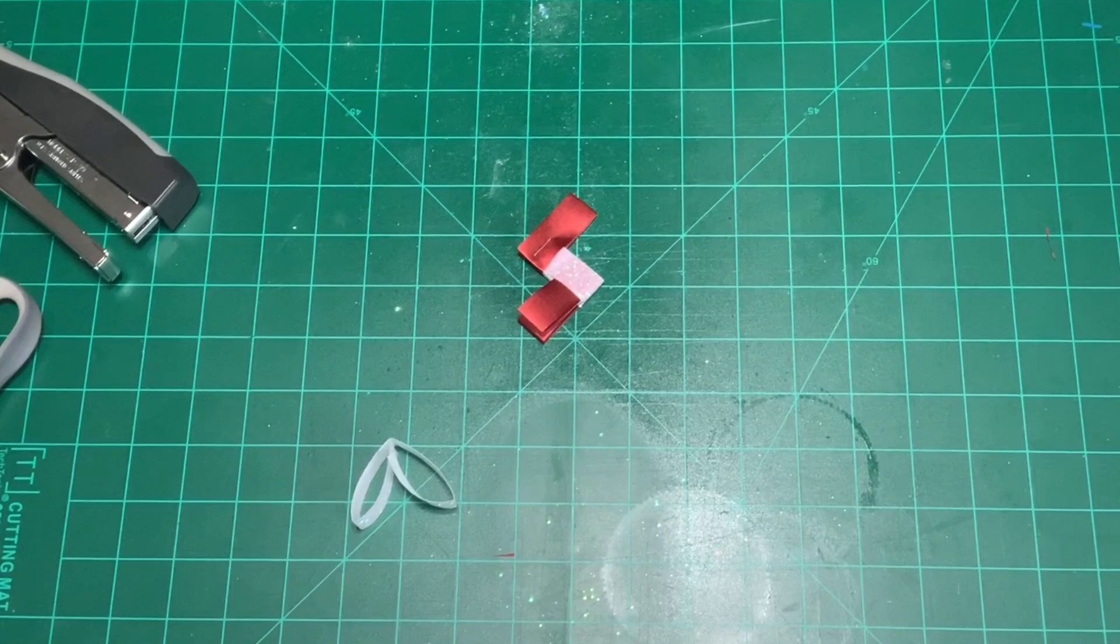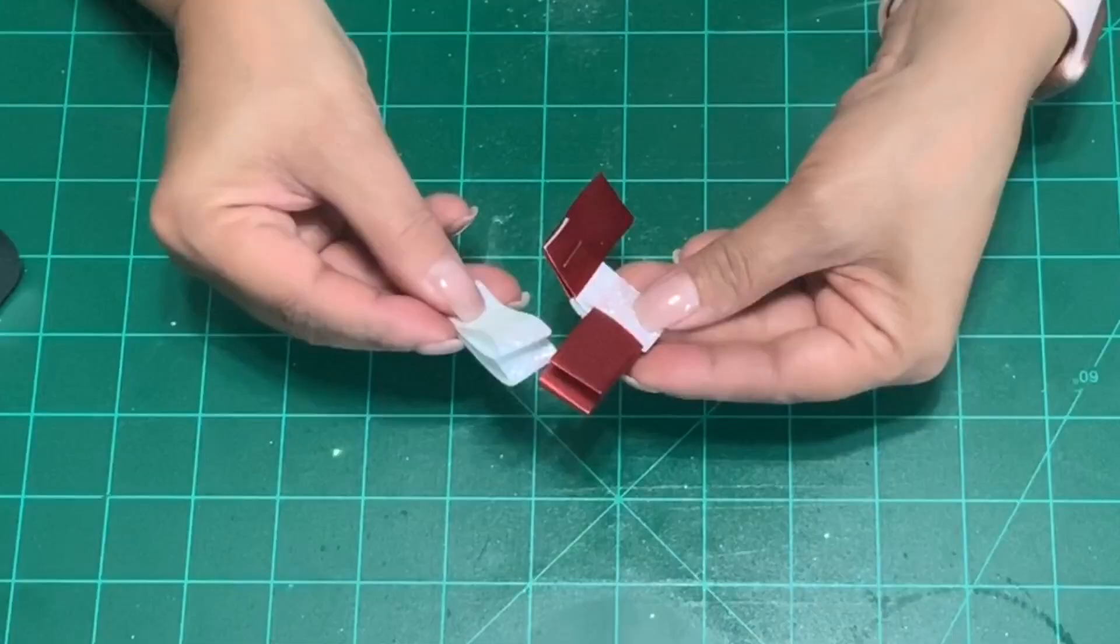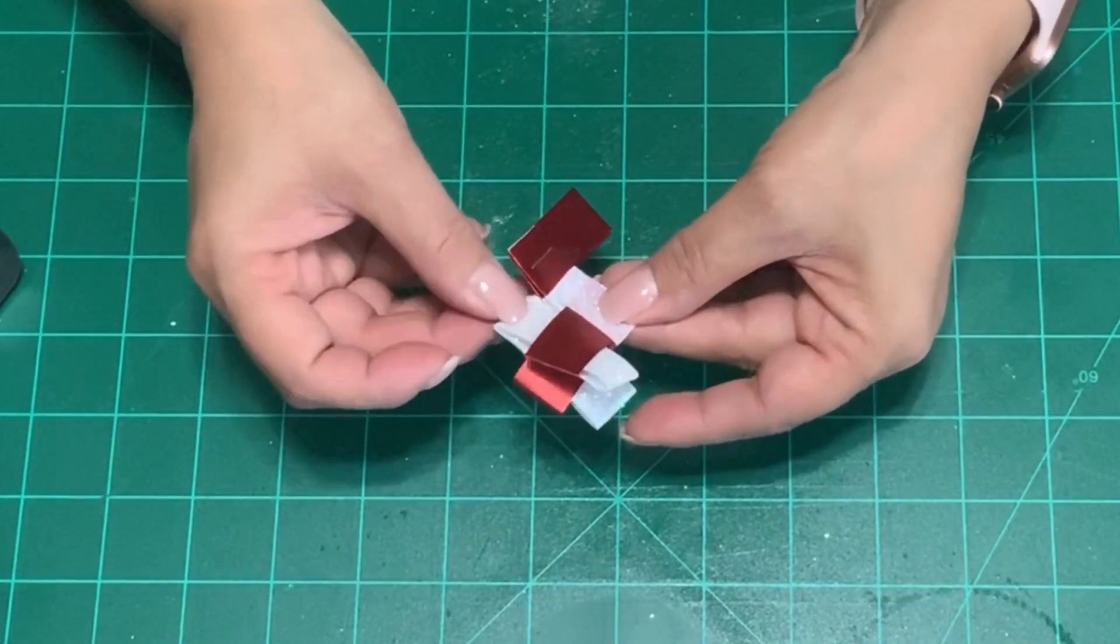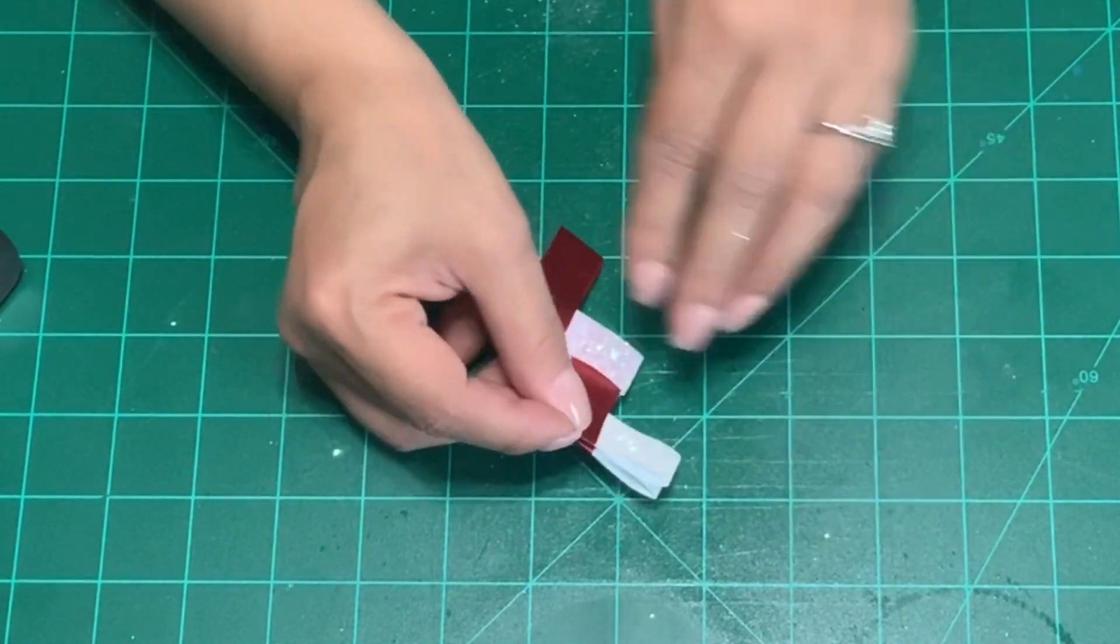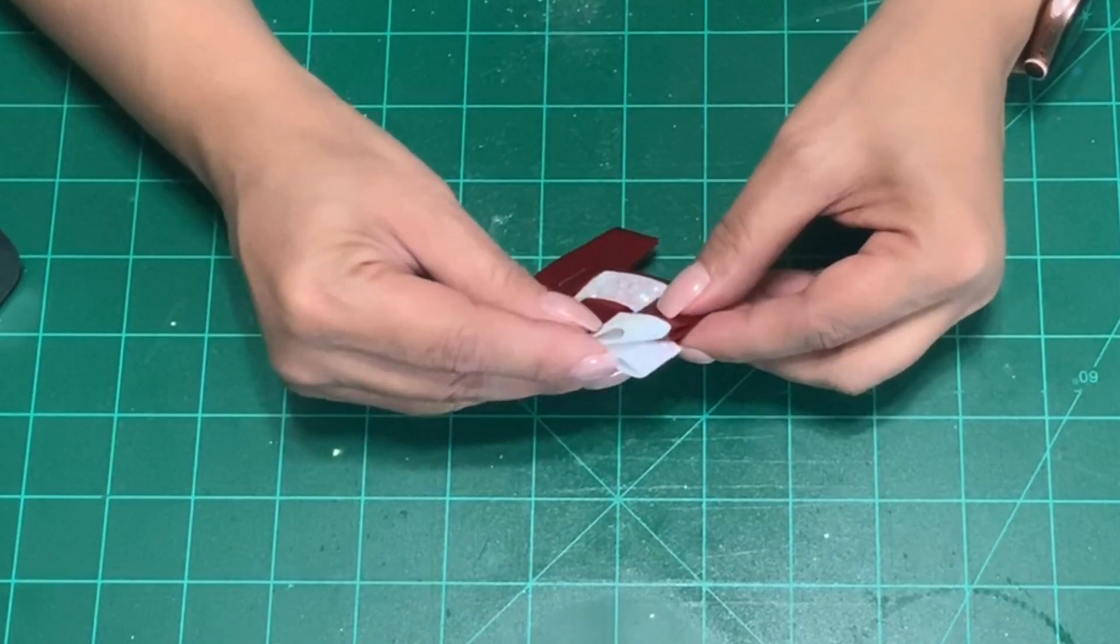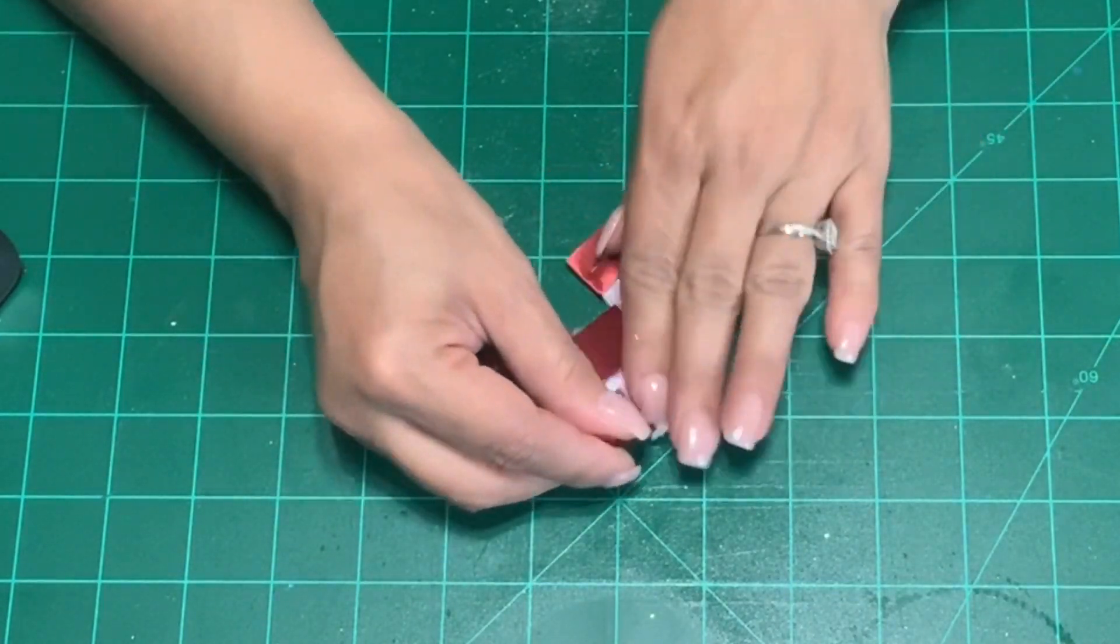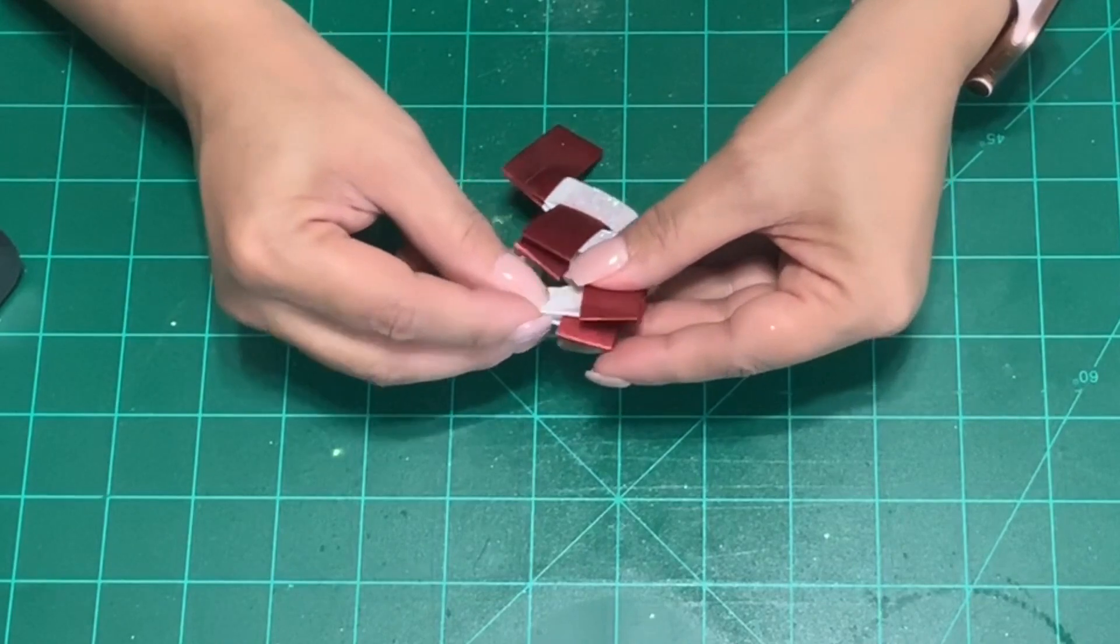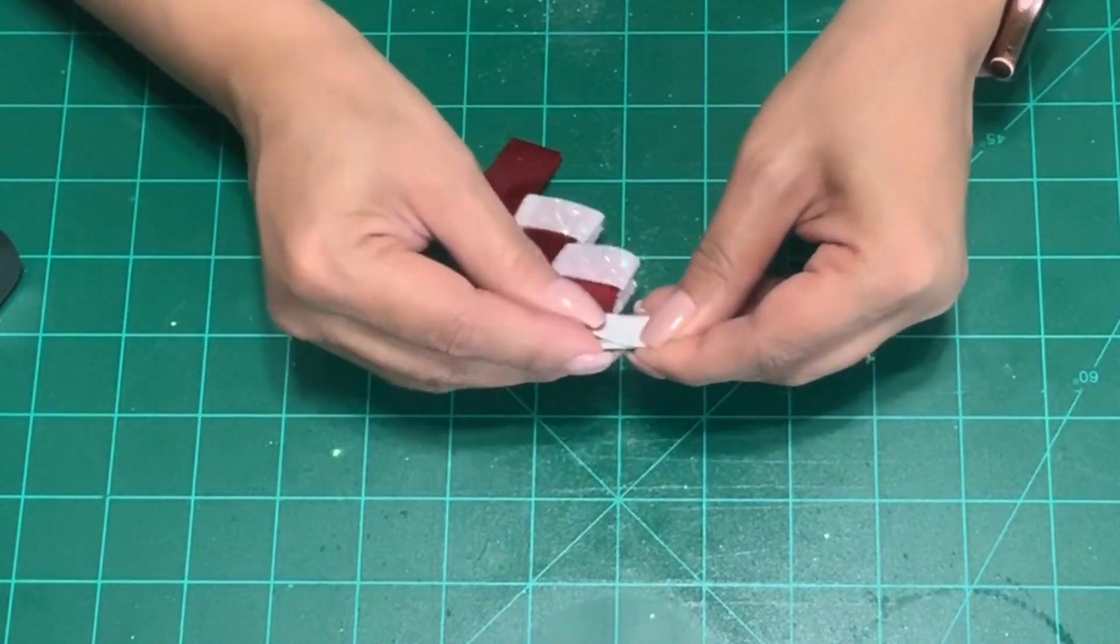Now we're going to take the white one and go across this way. So you'll start noticing that one side of the chain will be white and the other side will be orange. So now we'll go in with orange again alternating colors orange white orange white. You want to just keep going until you get the length that you want.